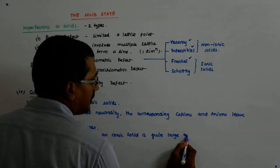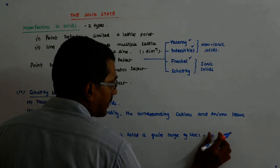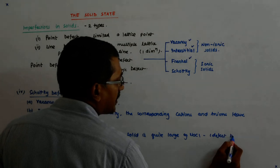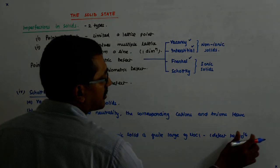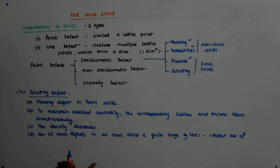Examples. In NaCl, there is one defect per 10 to the power 6 molecules. Now what happens? One defect per 10 to the power 6 molecules.